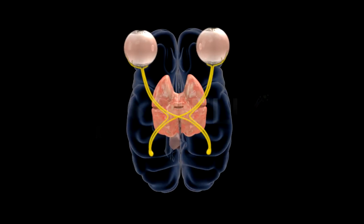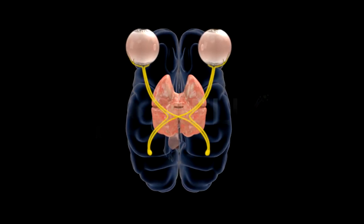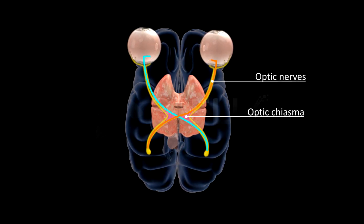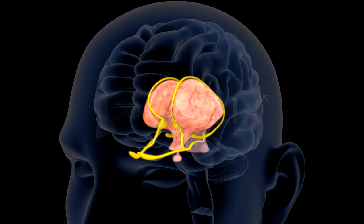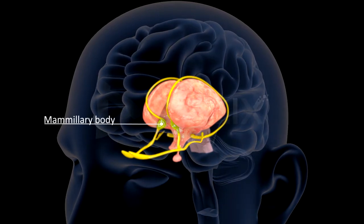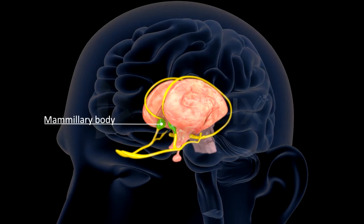On the anterior surface of the hypothalamus, in front of the infundibulum, the optic nerves cross one another, forming the optic chiasma. The posterior surface of the hypothalamus bears the corpus mammillae, or mammillary body, which is characteristic of the mammalian brain.